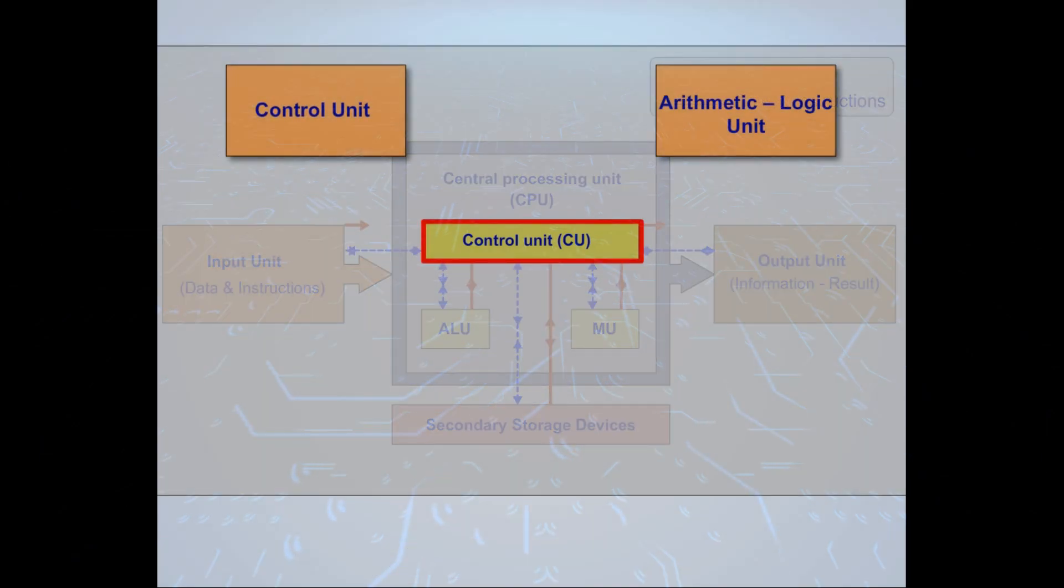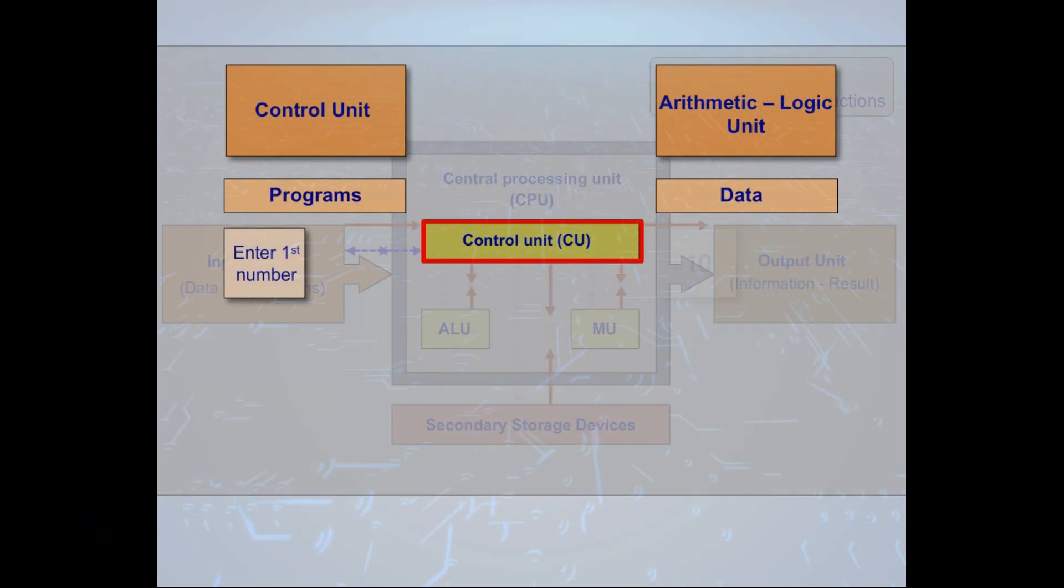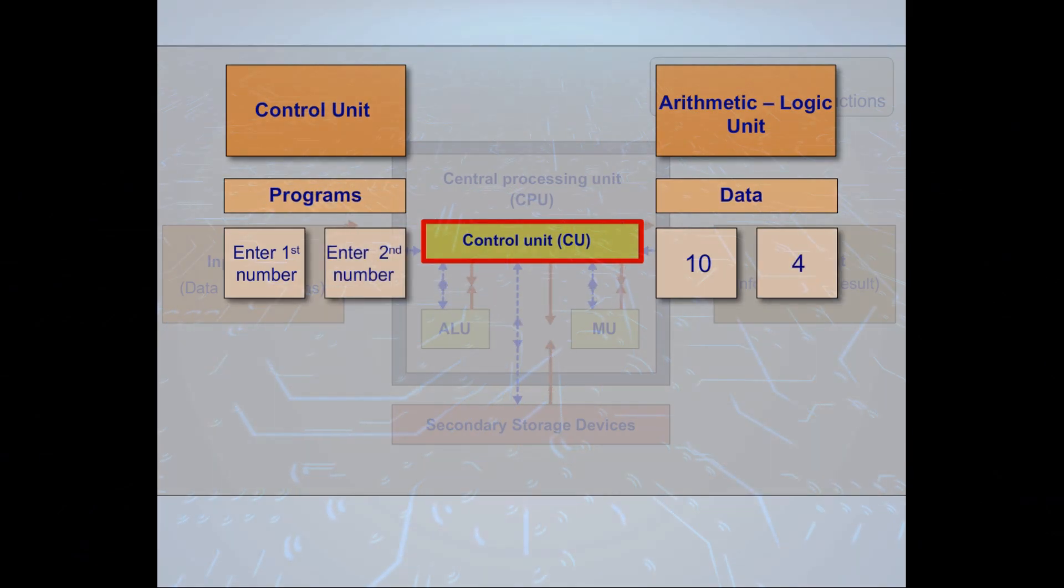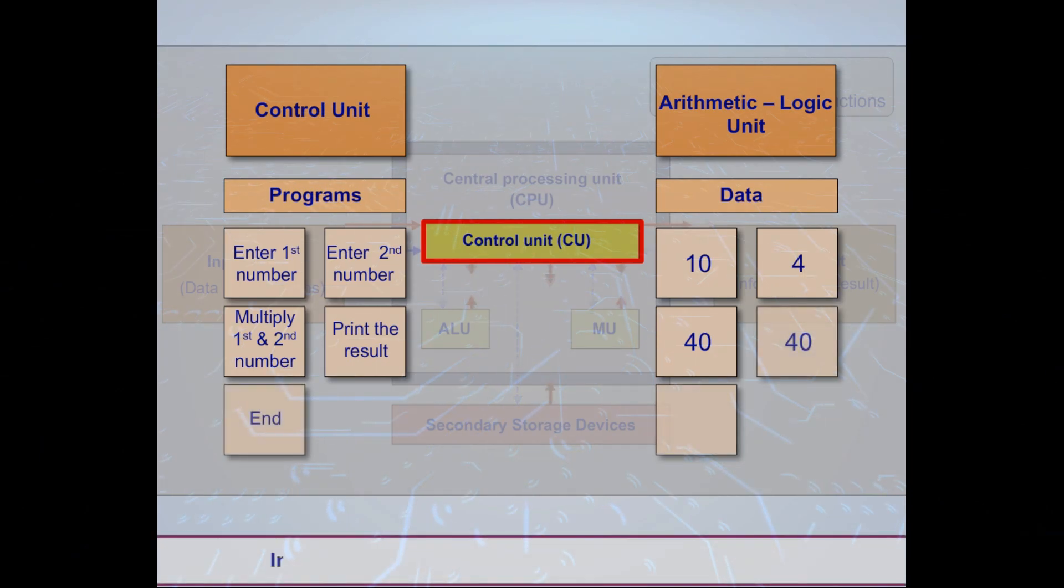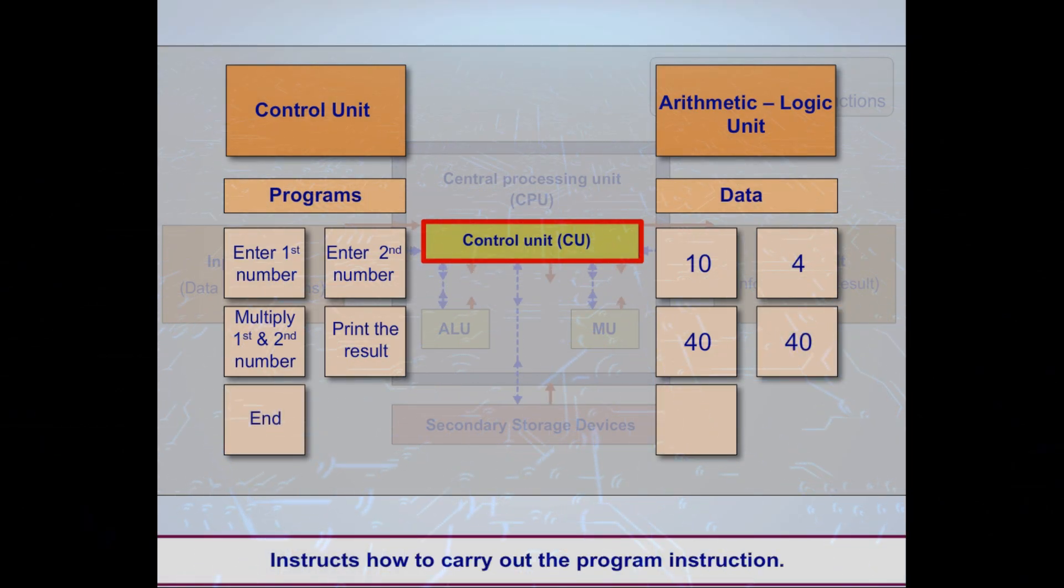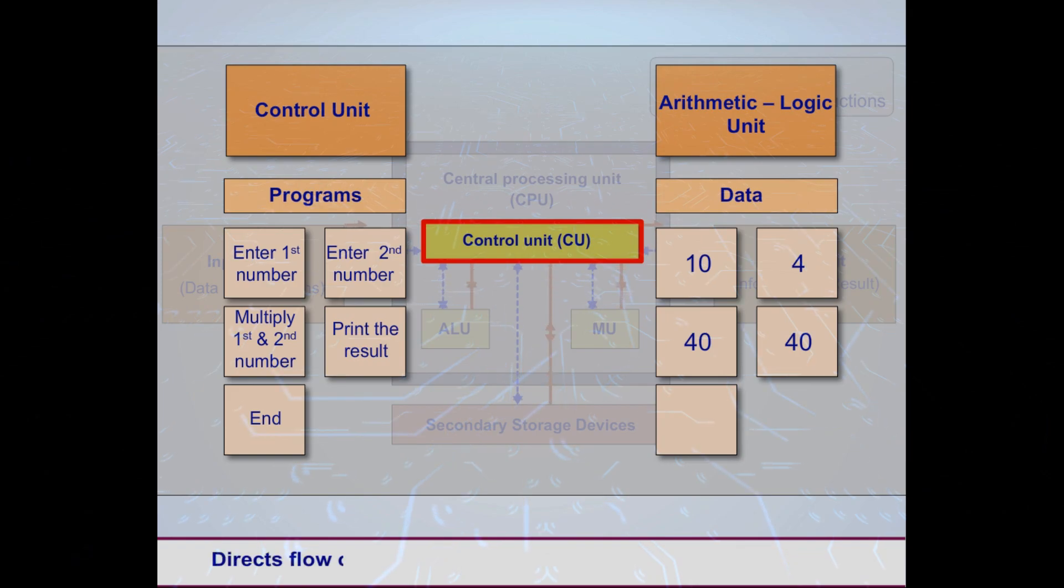For example: Enter first number 10. Enter second number 4. Multiply the first and second number. Print the result. When you multiply 10 by 4, it results in 40. Here, the control unit instructs how to carry out the program instructions and directs the flow of data between memory and the arithmetic logic unit.